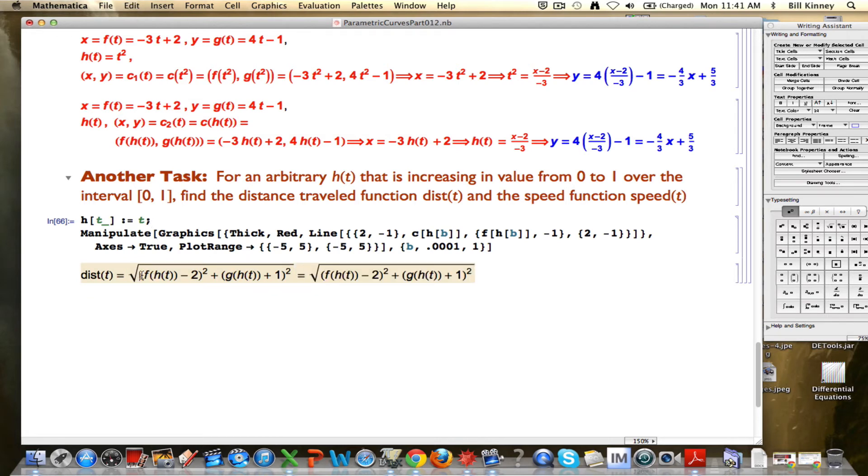First of all, I can plug h of t into f in place of t to get negative 3 h of t plus 2, but then when I subtract 2 down here, the 2s cancel, leaving me with negative 3 h of t. And that will be squared. When I plug in h into g, up here I get 4 times h of t minus 1, but because of the plus 1 here, the minus 1 and plus 1 cancel, leaving me with 4 h of t squared here.